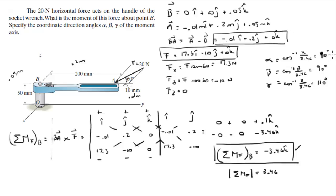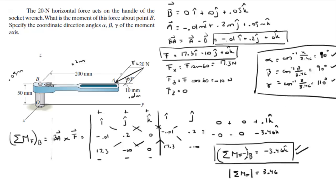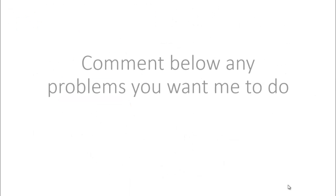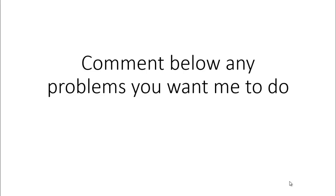Those are the final answers for the angles — 90°, 90°, and 180° — and the final answer for the Cartesian vector form of the moment that the force creates about B is negative 3.46K. Please comment below if you want me to do any problems, and I'll be happy to help. Thank you.